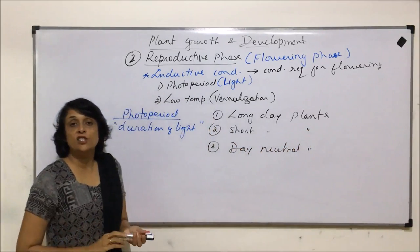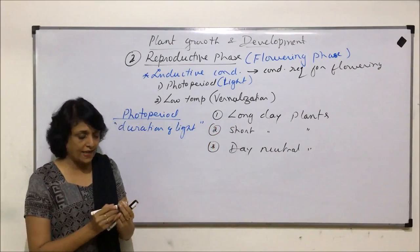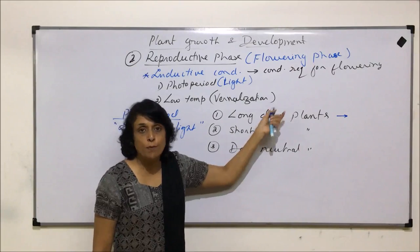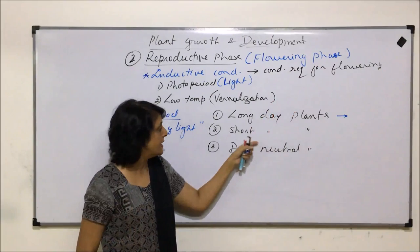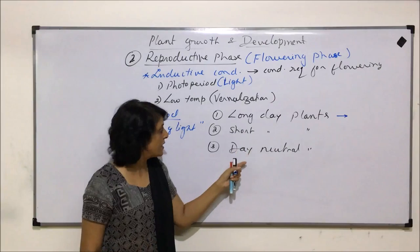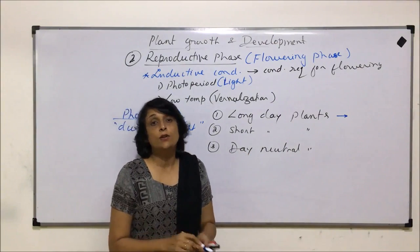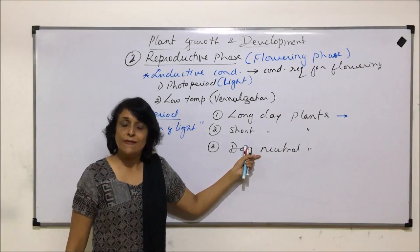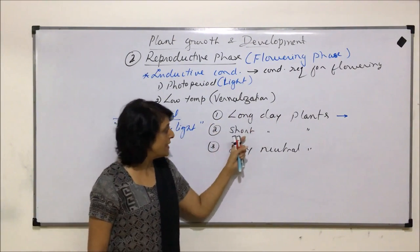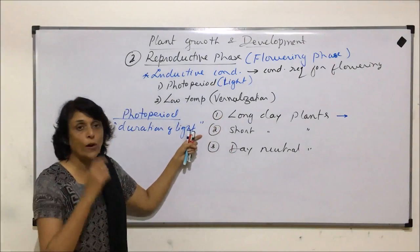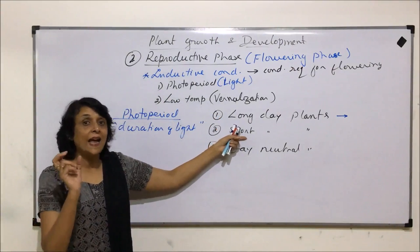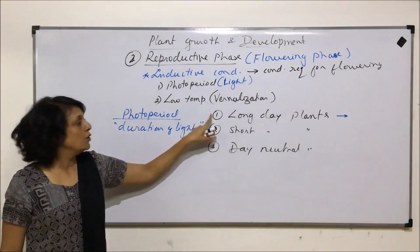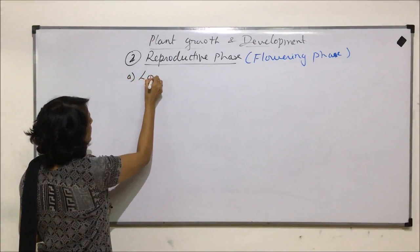Long day plants are the ones which require a longer photoperiod. Short day plants means a shorter duration of photoperiod or daytime is required. Day neutral means the plants are not specific about any duration of light and they flower whatever photoperiod is available to them. So on the basis of the requirement of light period or photoperiod, we classify them into three categories. We will take all three separately to understand what exactly is that factor which helps each particular category of plant produce flowers.